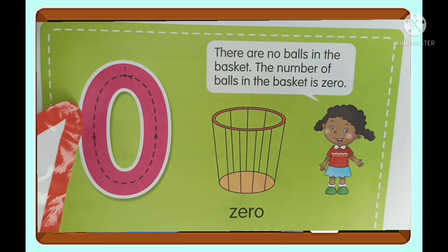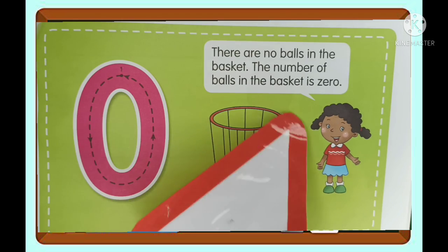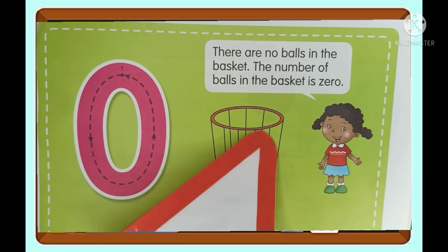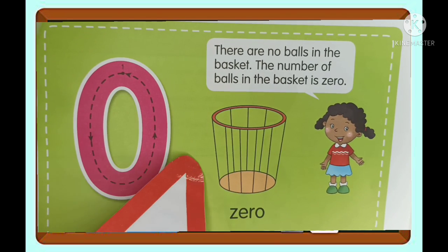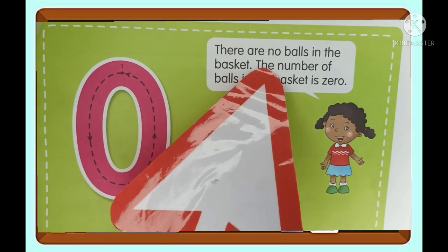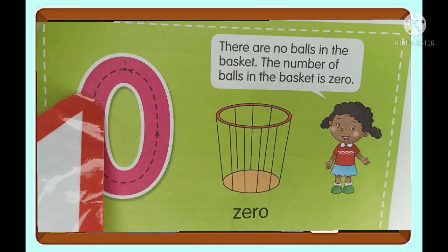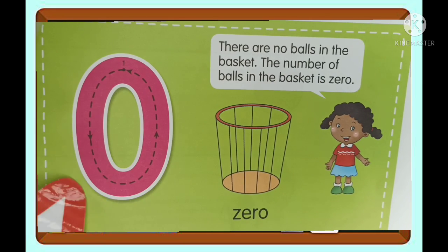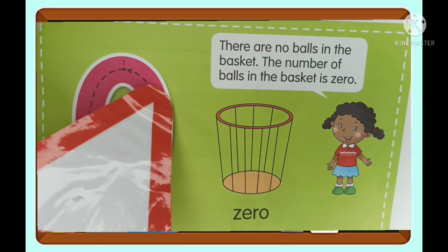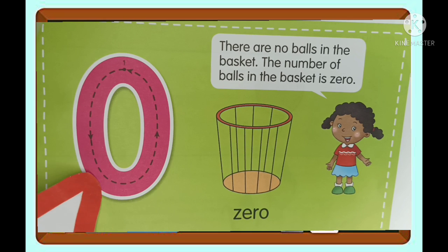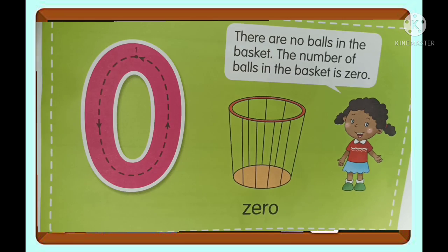What do you mean by zero? Zero means nothing is inside. There are no balls in the basket, so the number of balls in the basket is zero. We are going to write zero like this: one down, make a little circle, and then up there. It's zero.